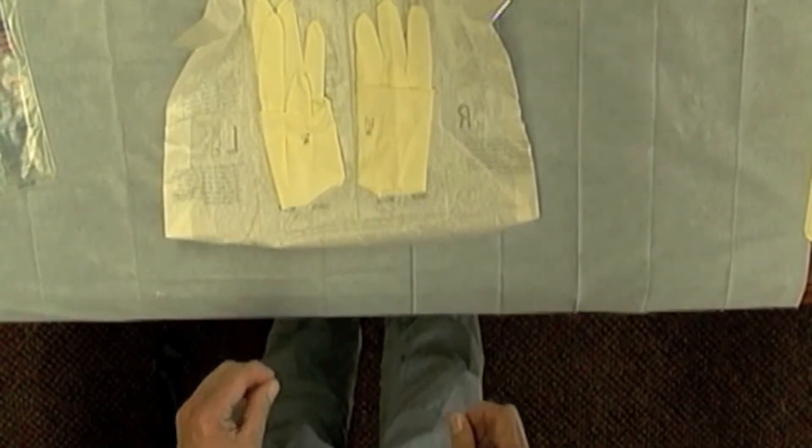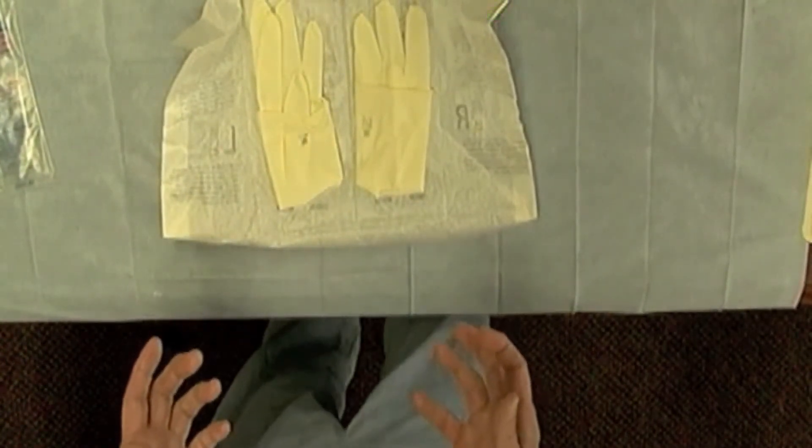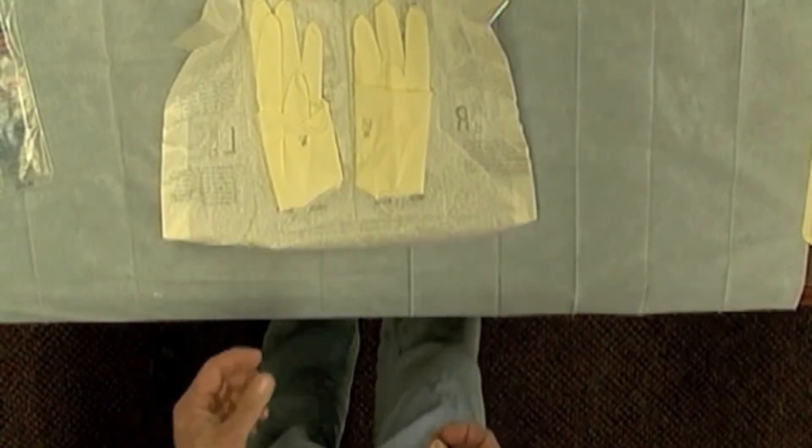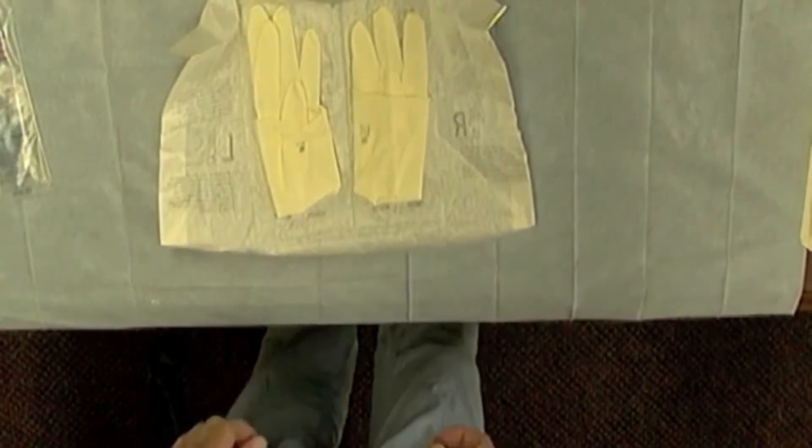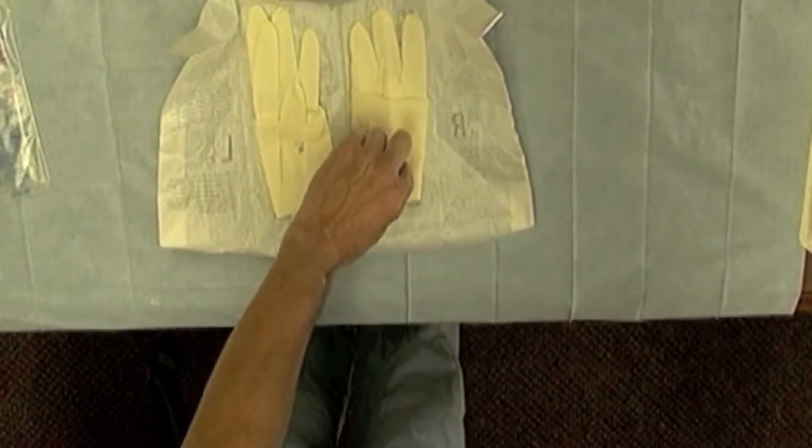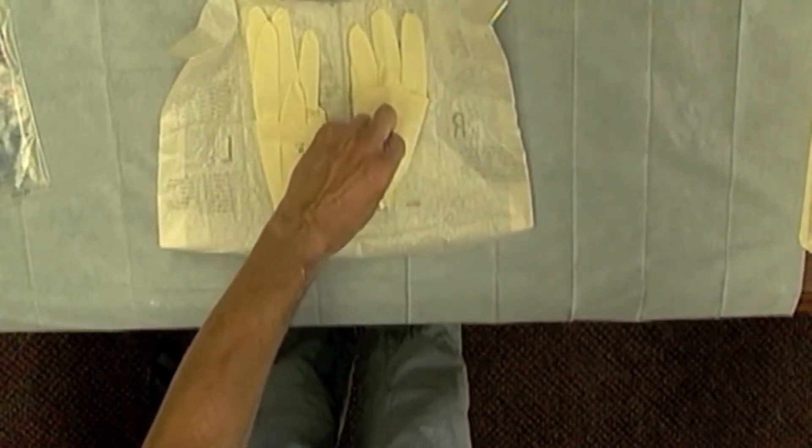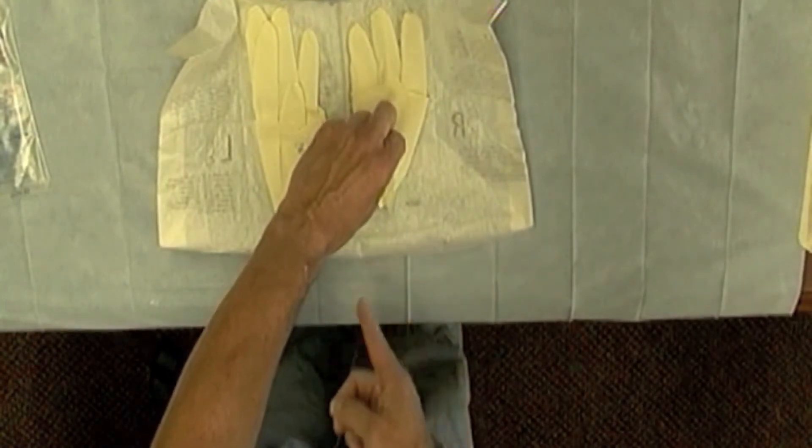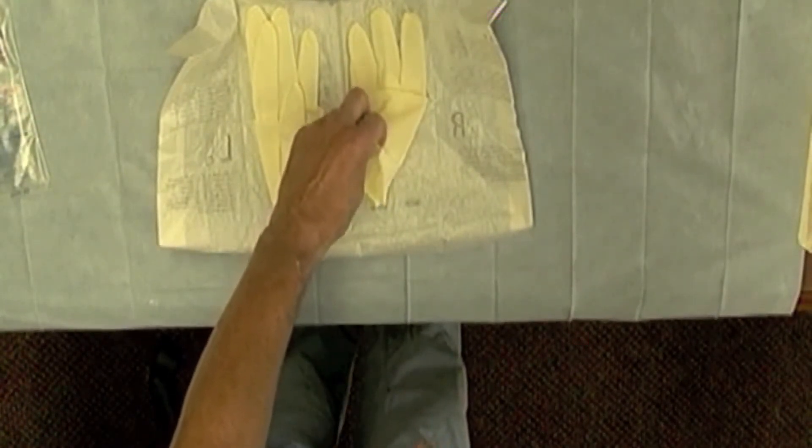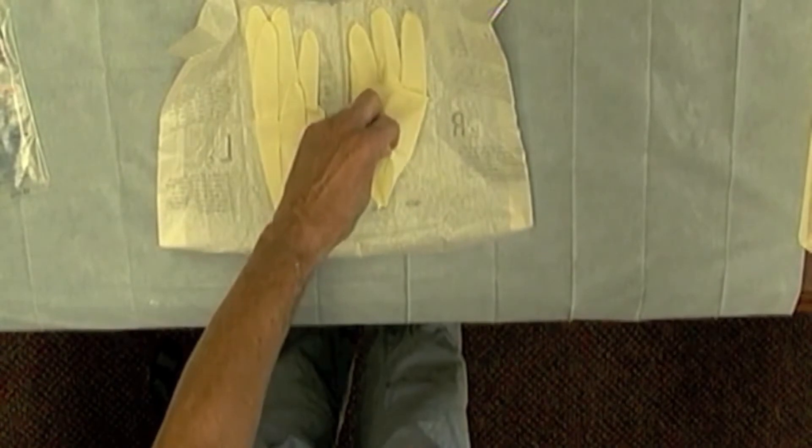Another important principle is that even if you scrub for open gloving, you don't want to touch the sterile portion of your glove pack. So you want to grab the first glove, which in this case is my right glove, on top of the glove, so I'm not grabbing at the edge or the cuff edge and contaminating the surgical field.